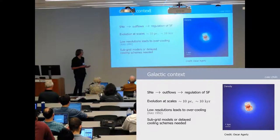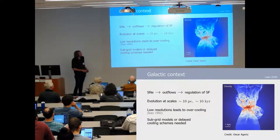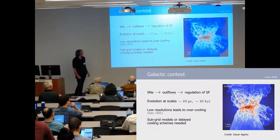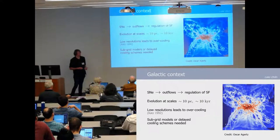In order to solve this, you often need subgrid models or delayed cooling schemes, which if they're not calibrated correctly you get something like this galaxy which Oscar August managed to create where you had too high supernova feedback.